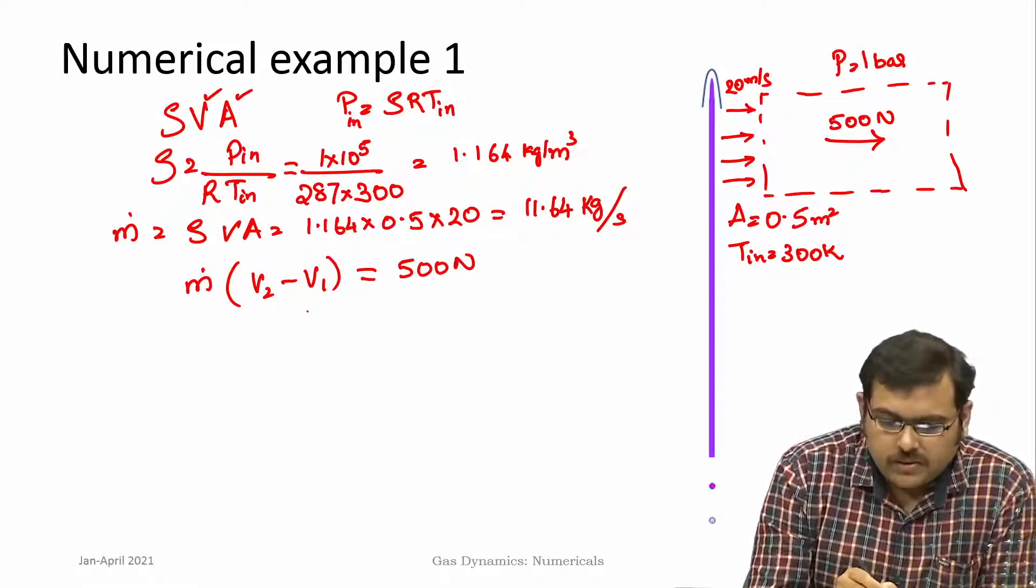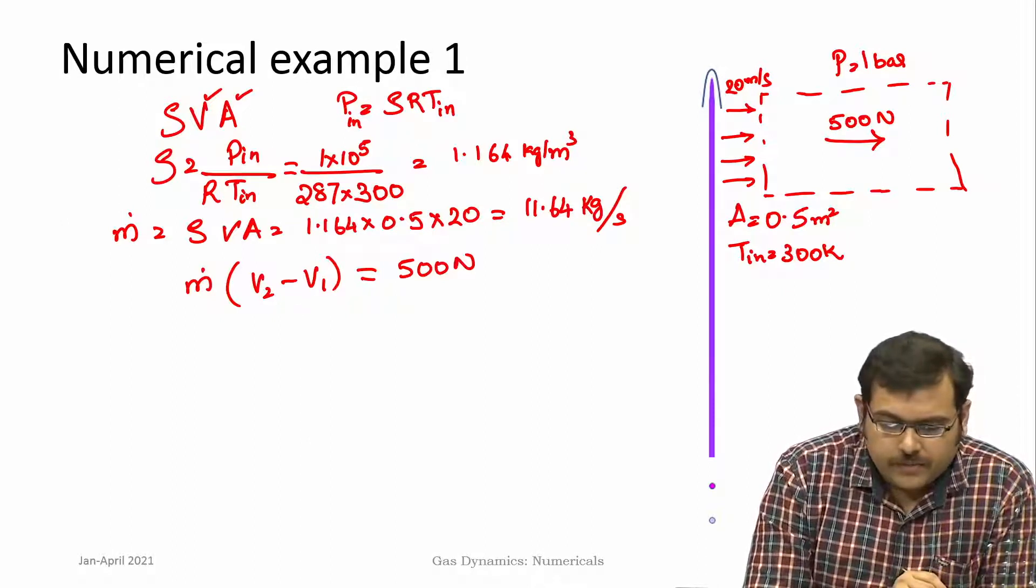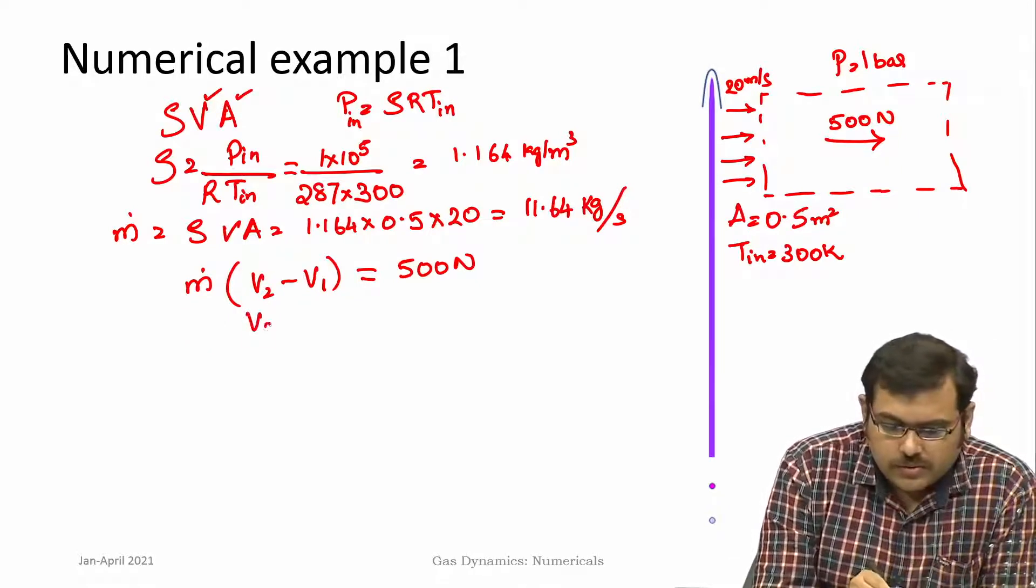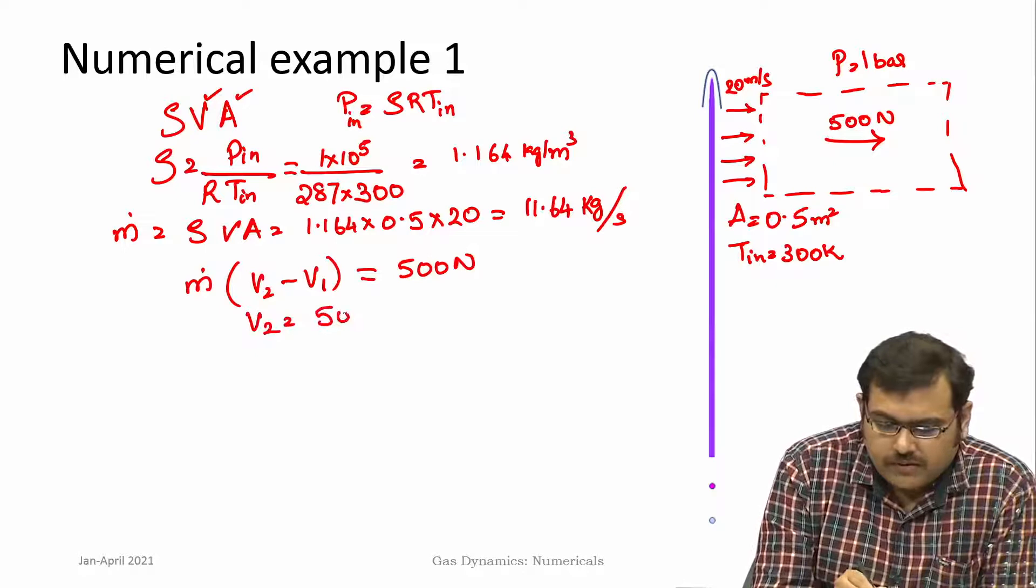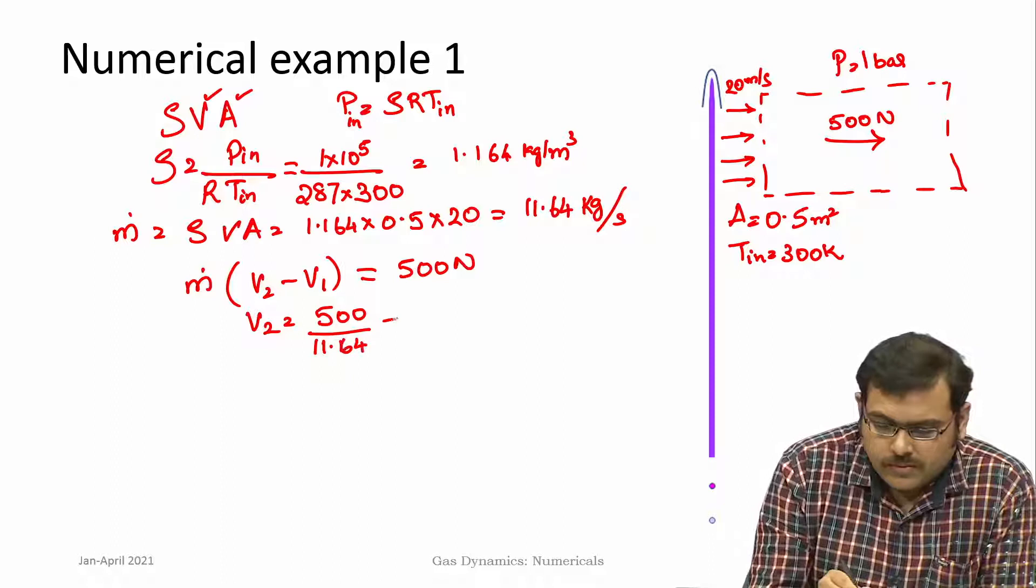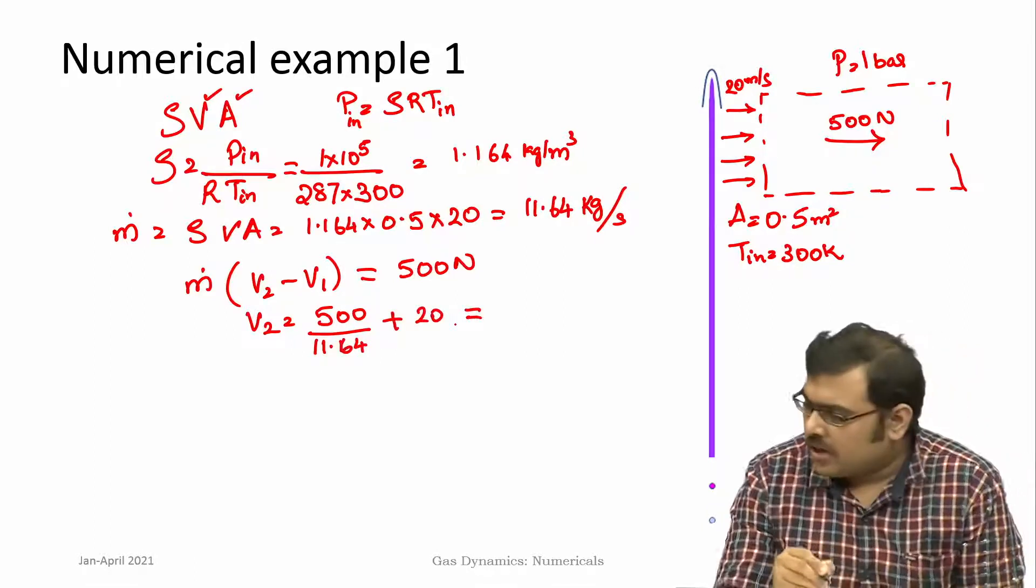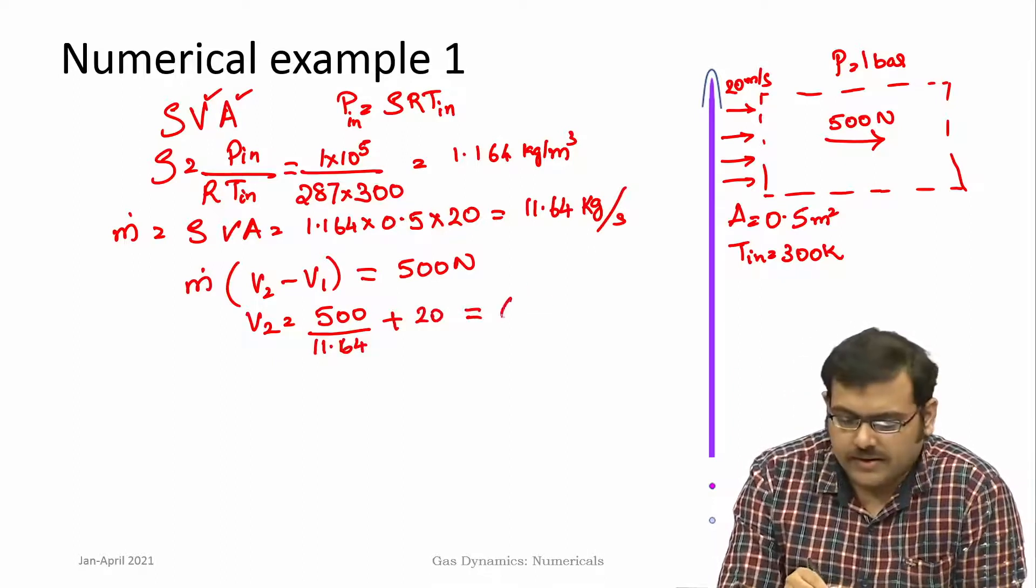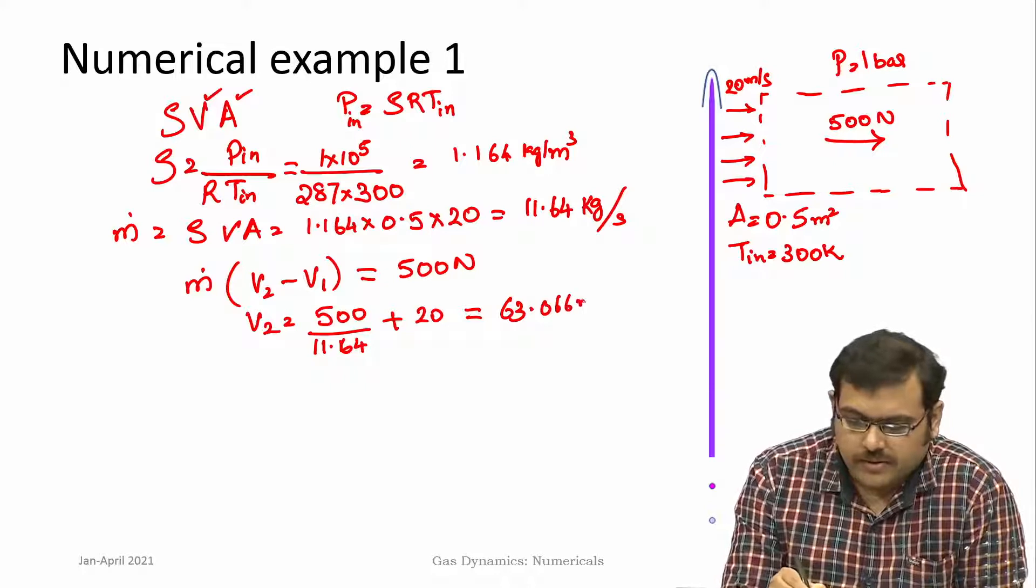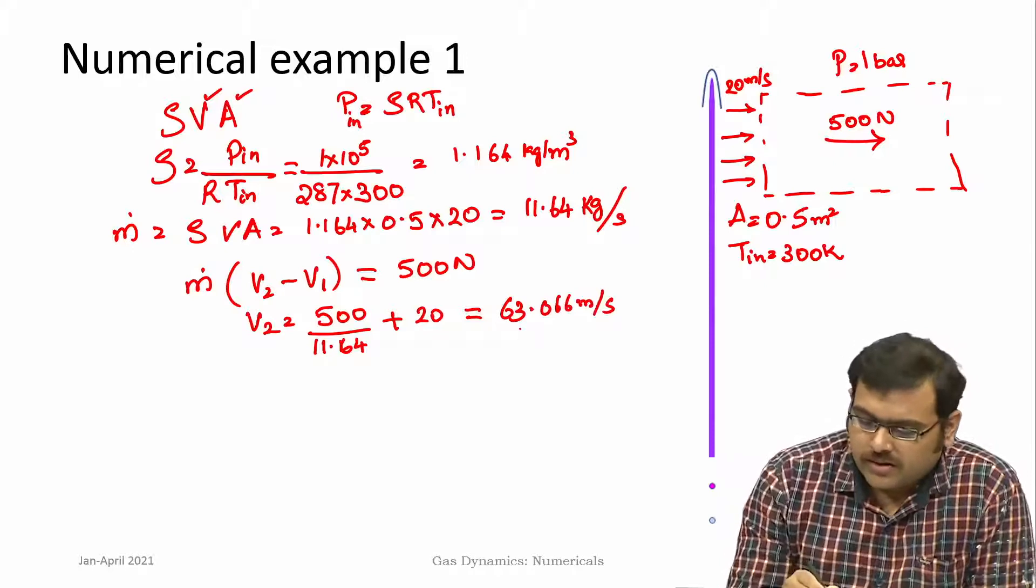V_1 is known here which is 20 meter per second. This is 11.64 times (V_2 - 20) equals 500, so V_2 can be directly found, which turns out to be 63.066 meter per second. There has been an increase in the velocity of the flow.